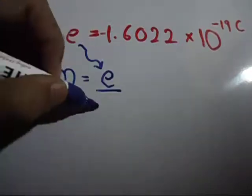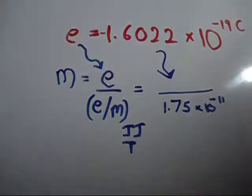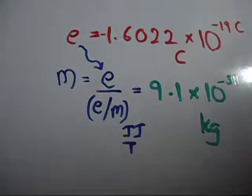And finally, with this, he was able to find the mass by using it with the ratio found in the previous experiment by JJ Thomson. Making the calculation, he found it to be 9.1 into 10 to the power minus 31 kg.